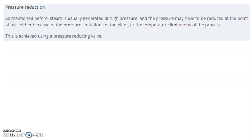Next is pressure reduction. Steam is usually generated at high pressure, and the pressure may have to be reduced at the point of use, either because of the pressure limitations of the plant or temperature limitations of the process. This is achieved using a pressure reducing valve.